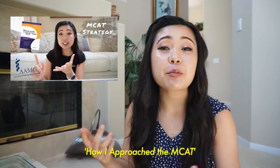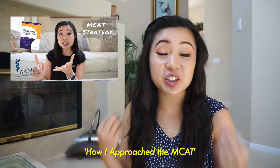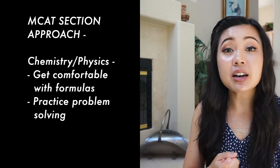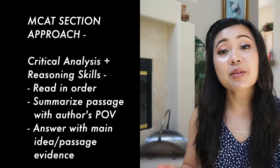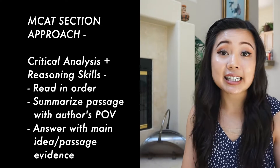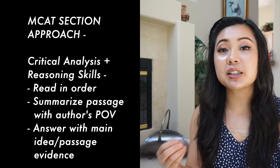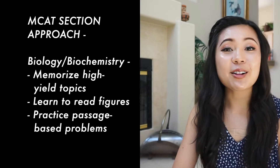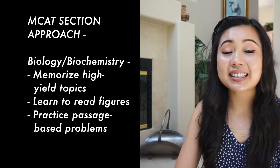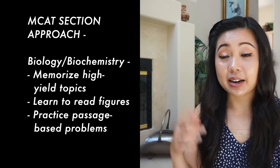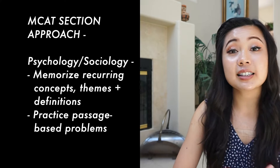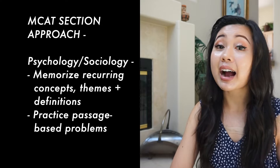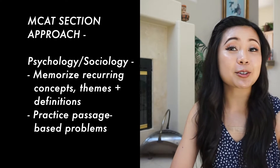My previous video went into detail about how I approached each section of the MCAT. As a quick refresher: for the chemistry and physics section, my focus was to get comfortable with equations and practice problems. For CARS, I read the passage, summarized the main idea with the author's point of view, and answered questions based on finding evidence from the passage. For biology and biochem, I memorized high-yield topics, learned how to read figures, and practiced a lot of problems. For psychology and sociology, I memorized reoccurring concepts, themes, and definitions, and I practiced a lot of passage-based questions for those one to two degree questions.